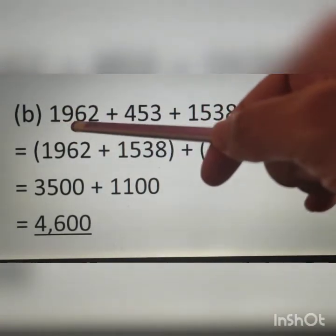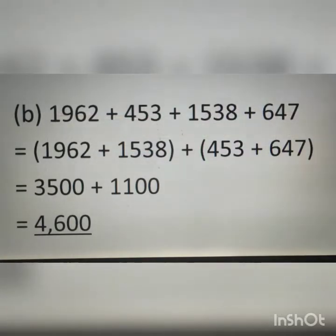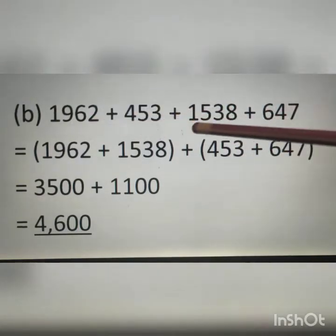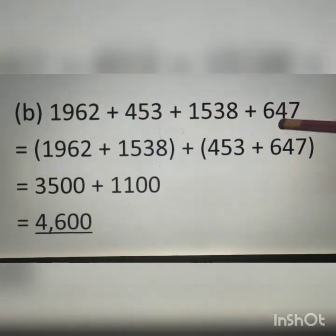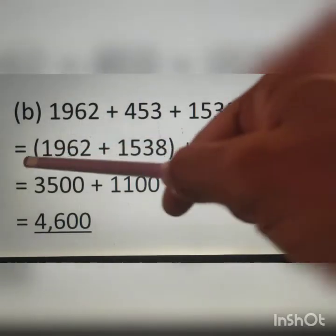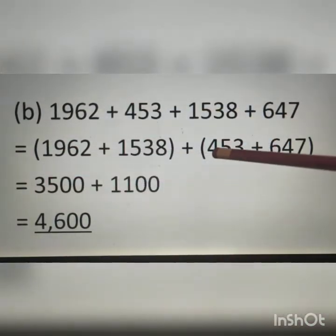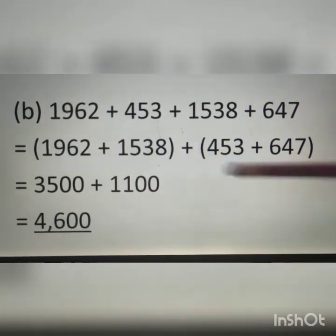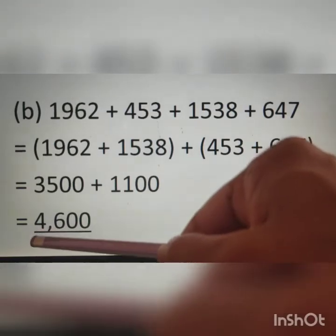Question B: 1962 plus 453 plus 1538 plus 647. By the commutative property, we can interchange numbers and in addition the value will not change. Here 1962 and 1538 are 4-digit numbers, so I put them in one bracket; and 453 and 647 are 3-digit numbers, so I put them in a separate bracket to make the calculation easier. Therefore, 1962 plus 1538 equals 3500, and 453 plus 647 equals 1100. The total is 3500 plus 1100, which equals 4600.